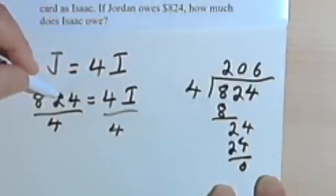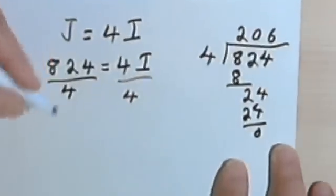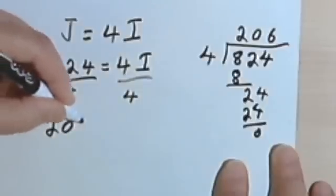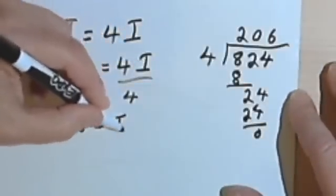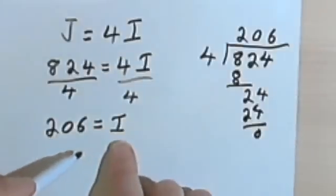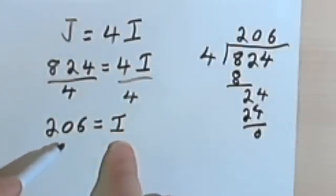So 824 divided by 4 would be 206, and 4i divided by 4 would just be i. So the amount that Isaac owes is 206 dollars.